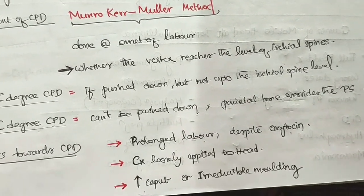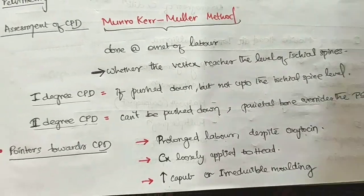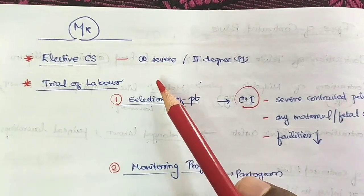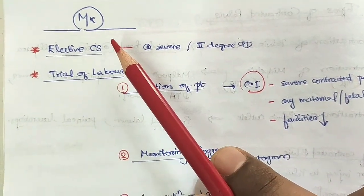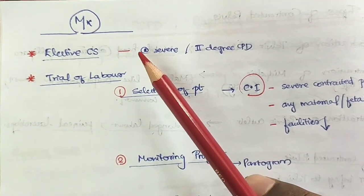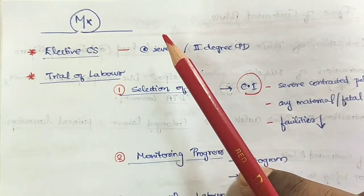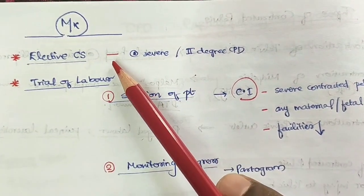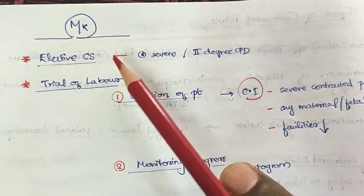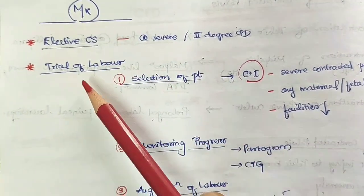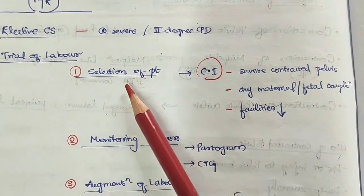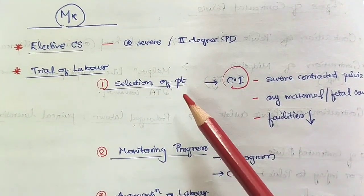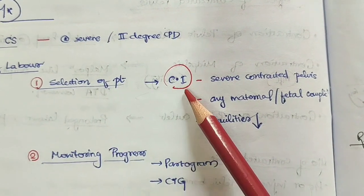These features point us towards CPD. Management: if it is a case of severe or second degree CPD, the management is elective cesarean section.